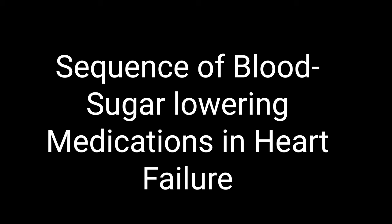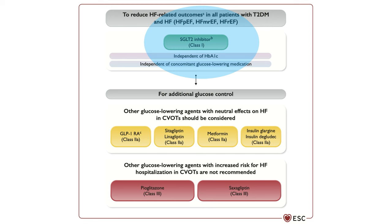Is there a sequence of priority for diabetes medications used in heart failure? Yes. We start with an SGLT2 inhibitor. If we need additional blood sugar control, we can add a GLP-1 receptor agonist. Then we think of linagliptin, sitagliptin, metformin, or insulin.